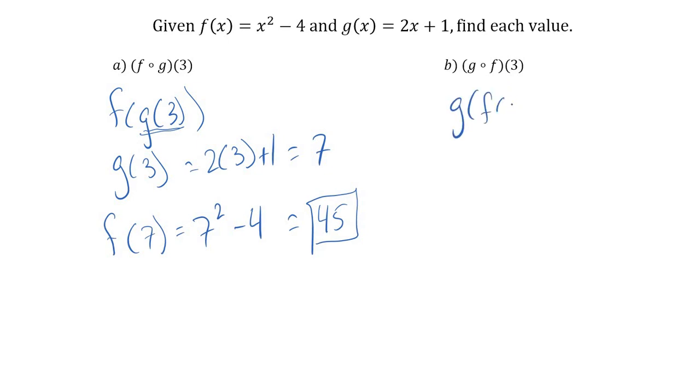What if I go the opposite direction? So g of f of 3. Is it the same thing? Well, let's do f of 3 first. So now I come up here, and I get 3 squared minus 4. 9 minus 4. So that's 5. So now I'm doing g of 5. And so 2 times 5 plus 1. Well, 10 plus 1.